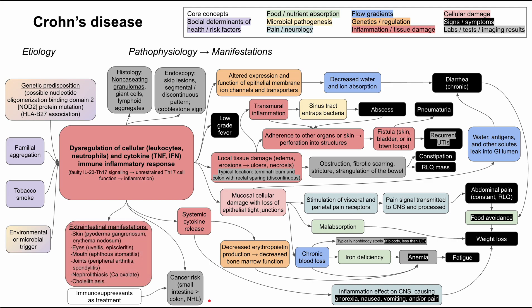Lastly, systemic inflammation leads to extra-intestinal manifestations throughout the body. On the skin: pyoderma gangrenosum or erythema nodosum. In the eyes: uveitis or episcleritis. In the mouth: aphthous stomatitis — ulcers in the mouth. The joints can develop peripheral arthritis or spondylitis. The kidneys can develop nephrolithiasis, specifically calcium oxalate stones. And cholelithiasis can also occur.